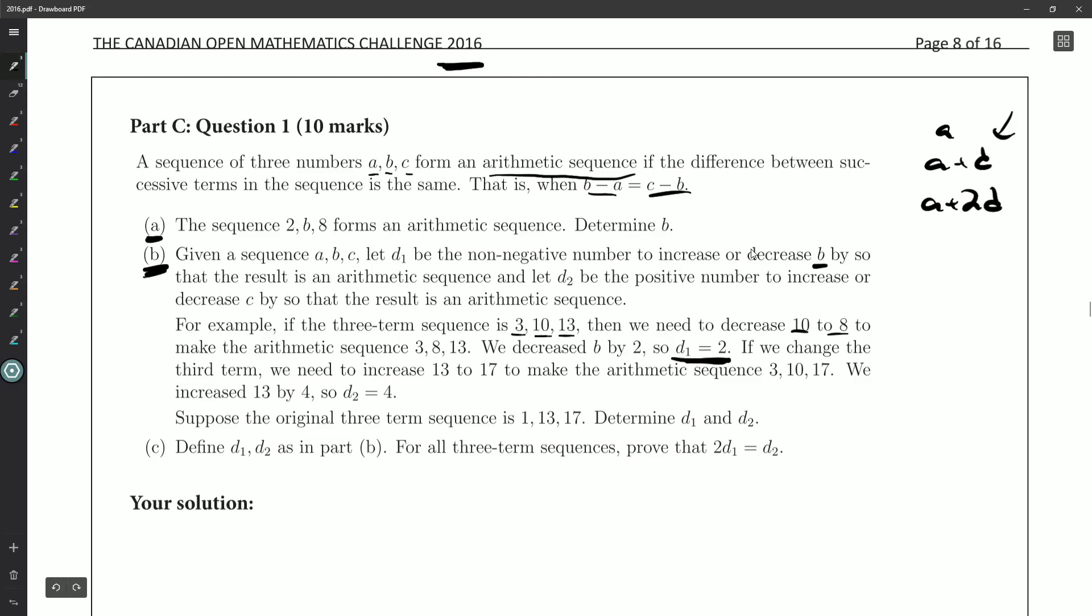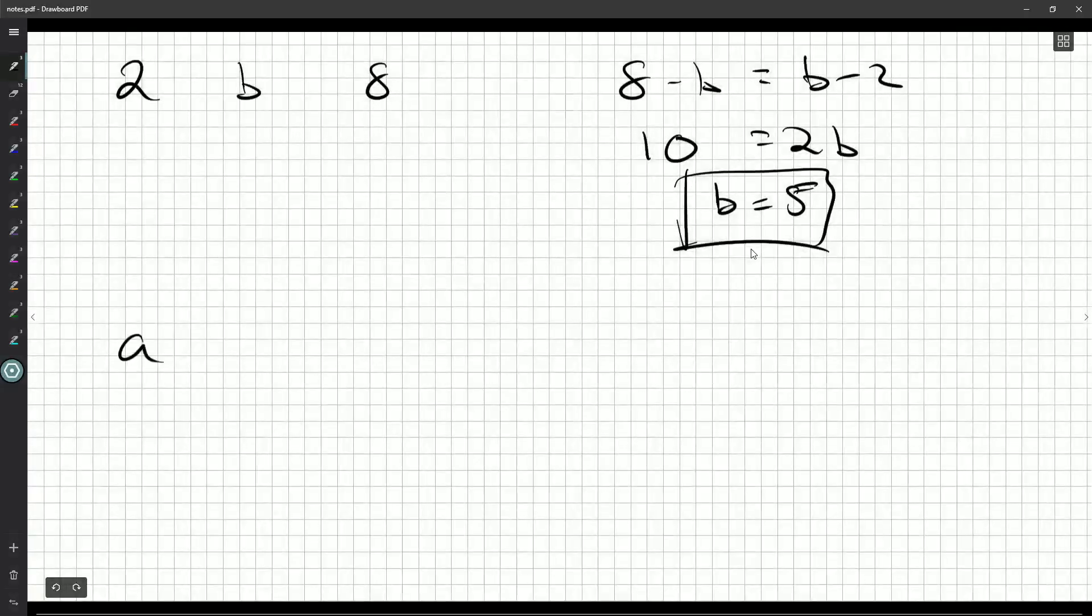If we change the third term to 17, so increase it by 4, D2 is equal to 4, we get an arithmetic sequence. Suppose the original three-term sequence is 1, 13, 17. Determine D1 and D2. So if I have A, B, and C, what we want is C minus B is equal to B minus A. But that won't necessarily be true until we change things. So I can't really fit these into a formula because I don't know if we're adding or subtracting D1. So let's just say this. We've got 1, 13, and 17, was it?